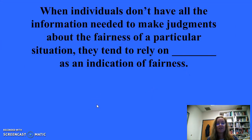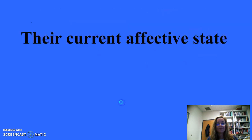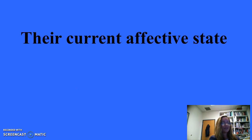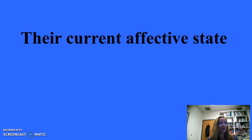For 200: When individuals don't have all the information needed to make judgments about the fairness of a particular situation, they tend to rely on their current affective state as an indication of fairness. Related concepts include procedural justice — judgments regarding the fairness of procedures used to distribute rewards — and transactional justice, which is the extent to which we're given clear reasons why rewards were distributed as they were, and the courtesy used in relaying such decisions.